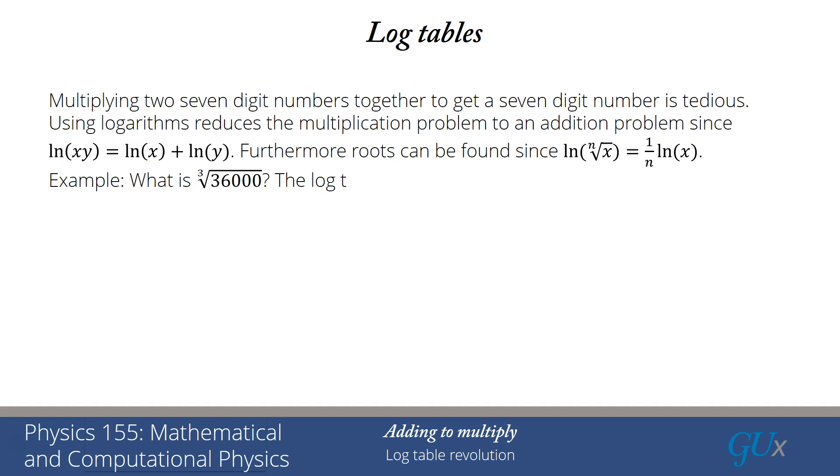So here's an example. What if we wanted to calculate the cube root of 36,000? The log table would show two entries.